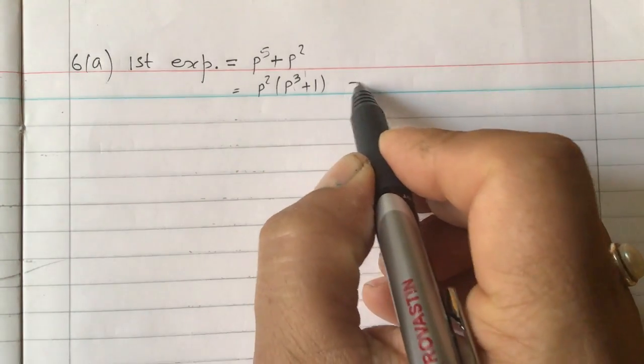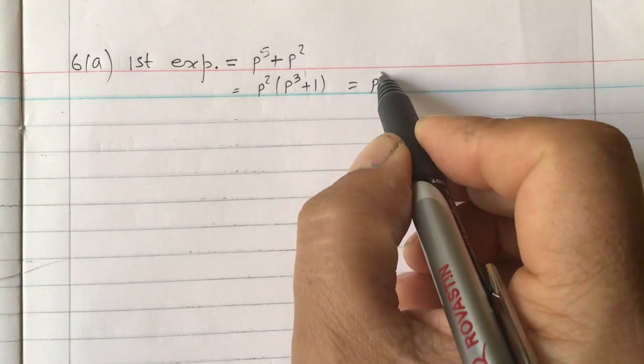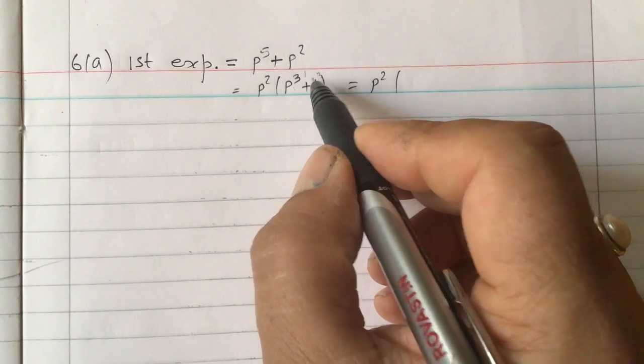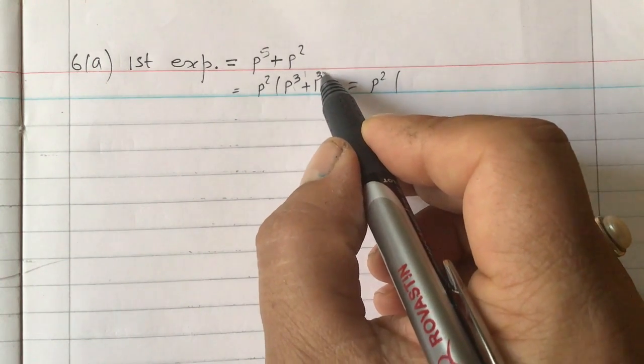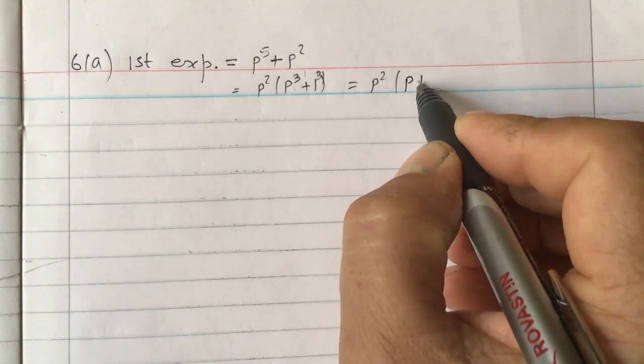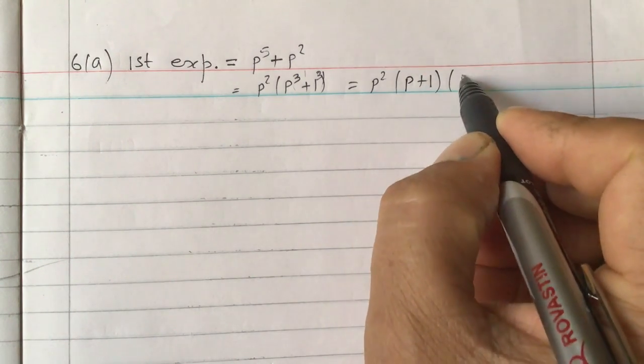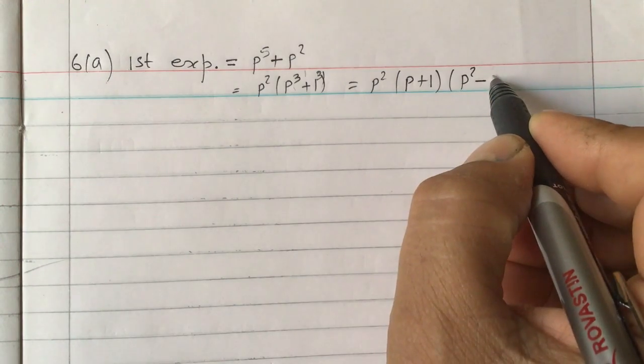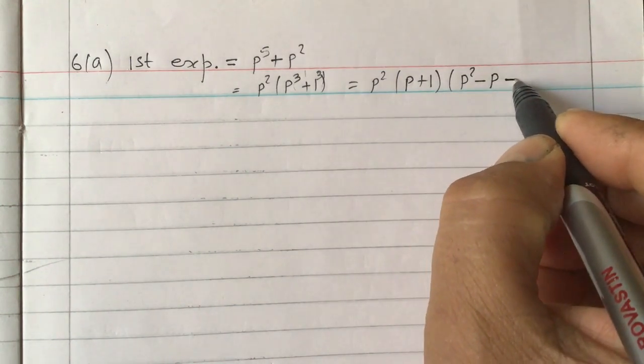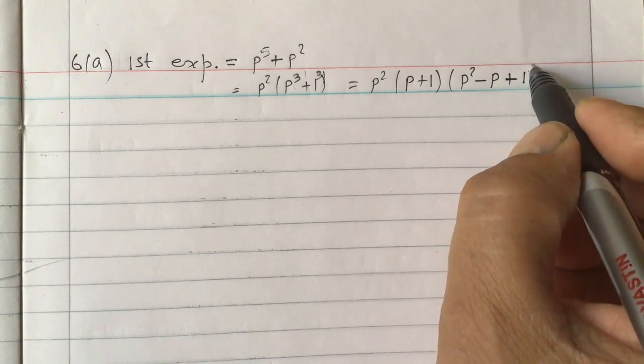Now we can apply the formula, so p square as it is we can write, this p cube plus 1, a cube plus b cube, 1 also cube will be there, so a cube plus b cube formula we can apply, so a cube plus b cube is a plus b and then a square minus ab, ab means p times 1, p times 1 is p only, plus 1 square is 1 itself.